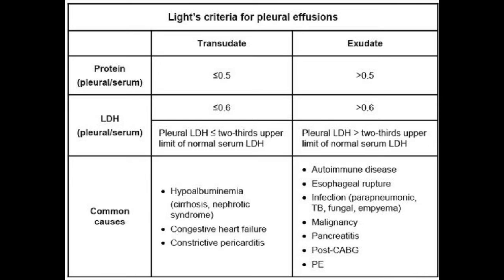If any of those ratios are above 0.5 or 0.6 that's exudate. Differentials for exudate include pneumonia or malignancy. If it's transudative — ratios below those thresholds — it's most likely CHF, which causes backing up into the pulmonary veins and capillaries causing edema; cirrhosis, where less albumin is made leading to decreased intravascular oncotic pressure; or nephrotic syndrome, where proteins are lost in urine, also decreasing intravascular oncotic pressure.